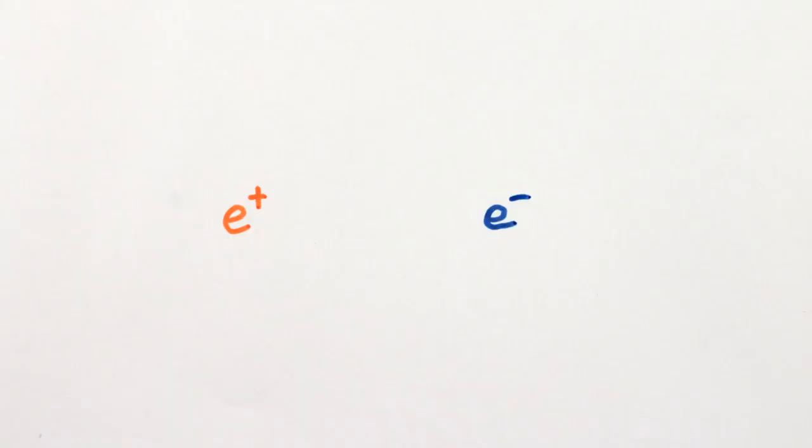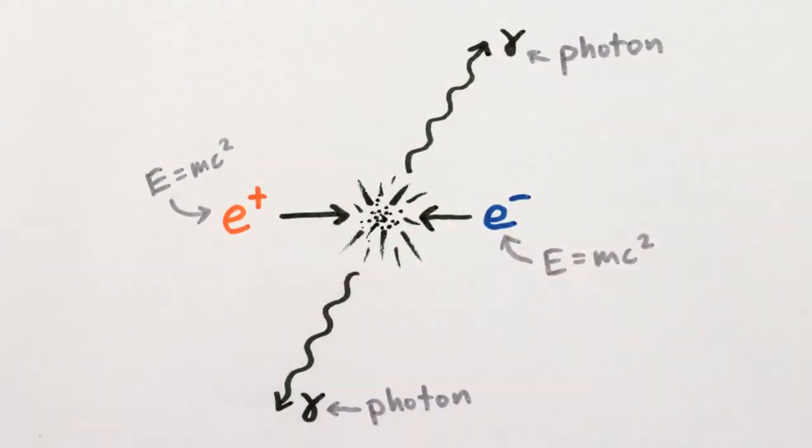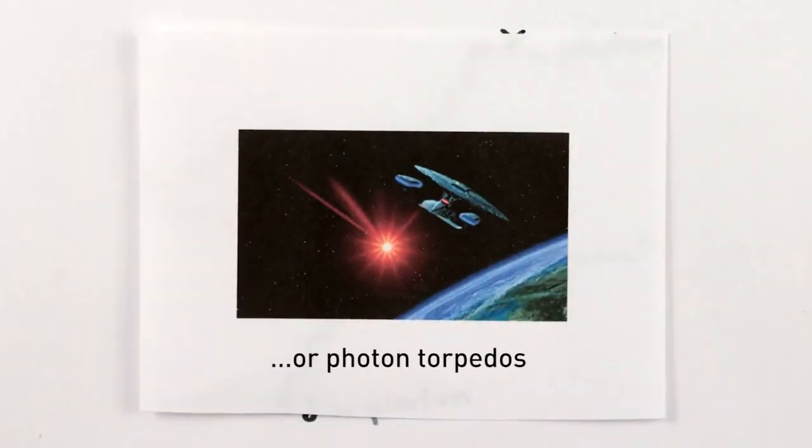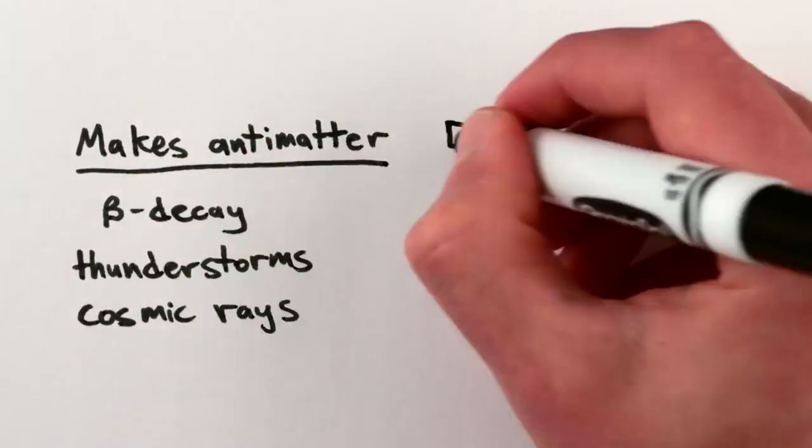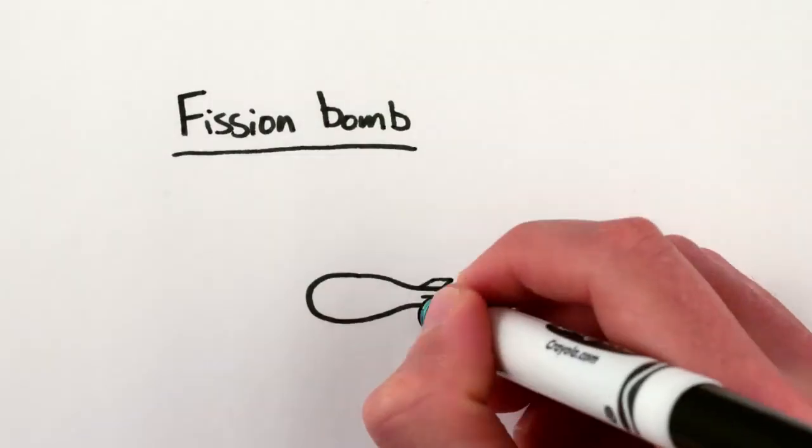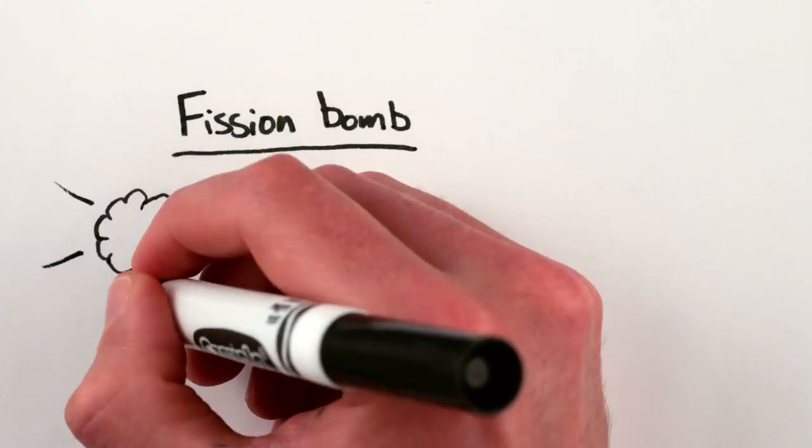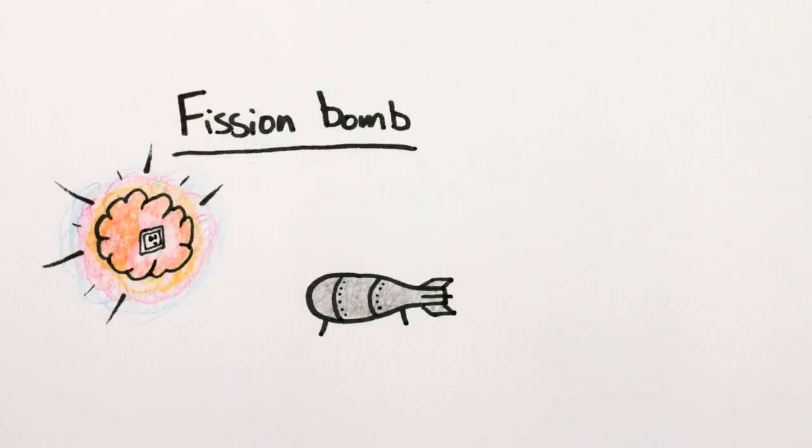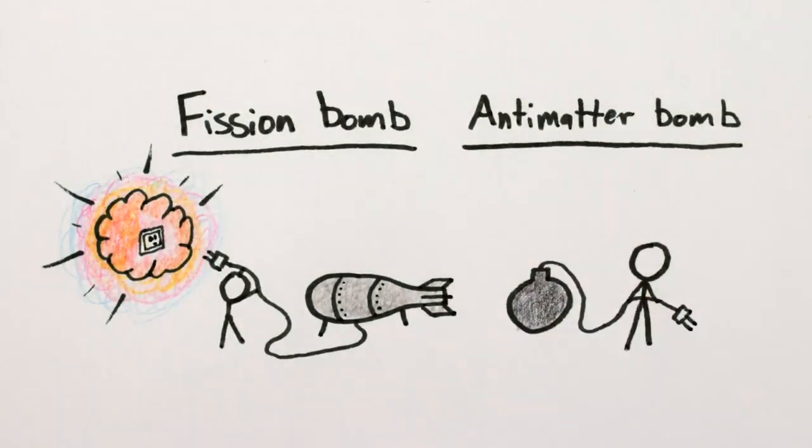And when a particle and antiparticle annihilate, the energy has to go somewhere, which is why matter-antimatter annihilations have been proposed as bombs. But naturally occurring antimatter is hard to come by. So unlike a uranium fission bomb, which allows us to release the bottled energy of the supernovas that forged the uranium in the first place, you'd have to put all the energy into an antimatter bomb yourself by making antimatter.